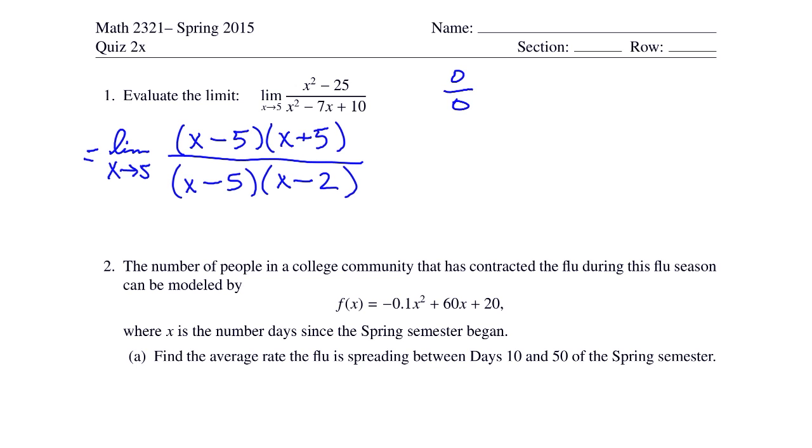And sure enough, the factor that is causing the 0 is x minus 5, and that cancels from both the top and the bottom.